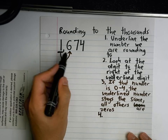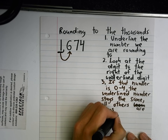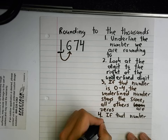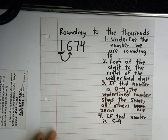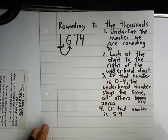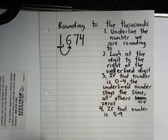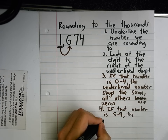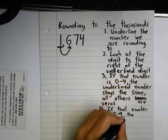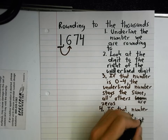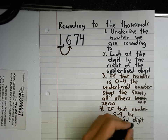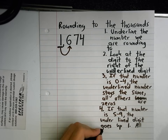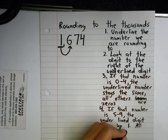What happens if this number is five or more? If that number is five to nine, if it's five or higher, the underlined number goes up one, and all others are zeros.